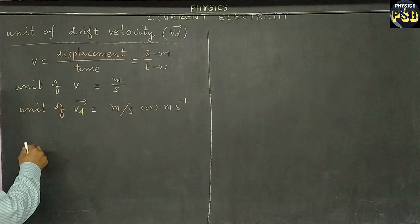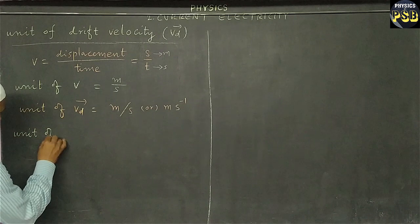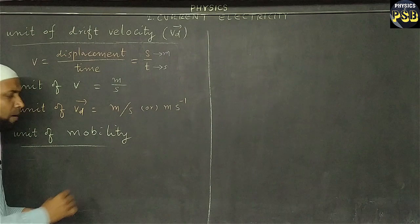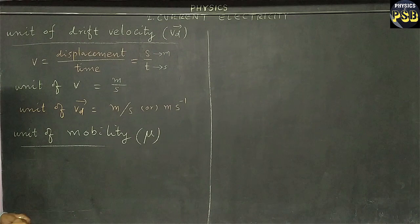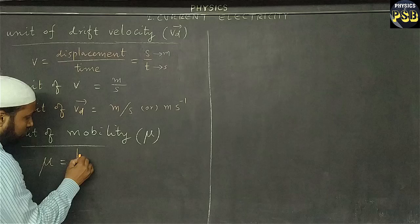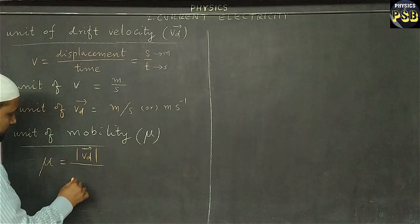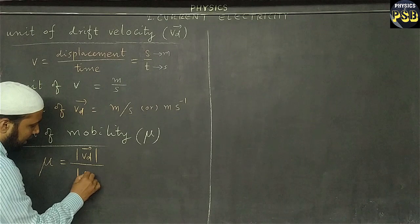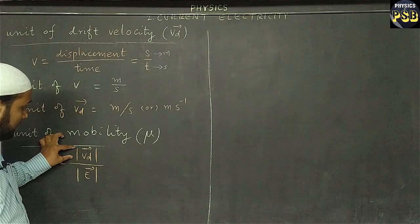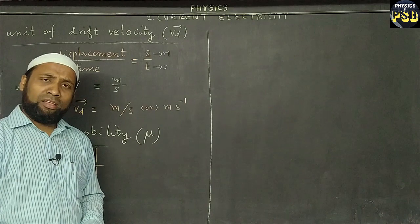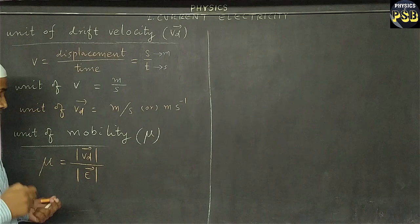Now let's find out the unit of mobility. Mobility is represented by the letter mu (μ), which is the ratio of the magnitude of drift velocity to that of the electric field. In simple words, mobility is the drift velocity per unit electric field.